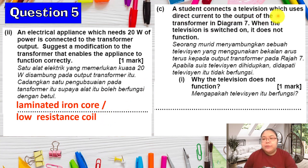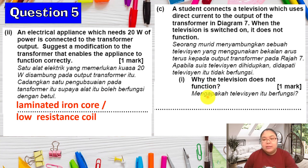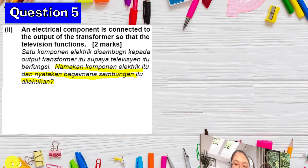A student connects a TV to the output of transformer diagram 7. I mentioned that the transformer uses alternating current. But when the TV is switched on, it does not function. You need to think about the TV — a TV uses direct current. So the reason the TV does not function is that the transformer supplies alternating current but the TV cannot work on alternating current.